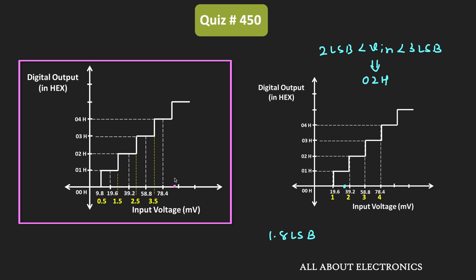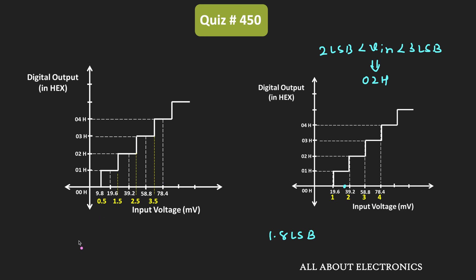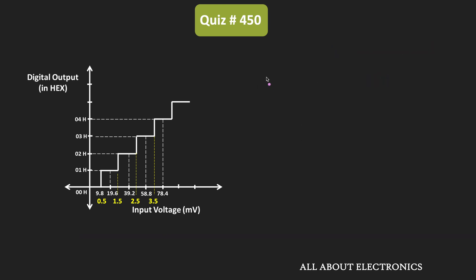For the given transfer characteristic, when the input code is between 0.5 and 1.5 LSB, the corresponding output code is 01. Likewise, we get the corresponding output codes for other ranges. Basically, the entire transfer characteristic has been right shifted by 0.5 LSB. So first, let us represent the input voltage in terms of LSB, from which we can easily find the corresponding output code.